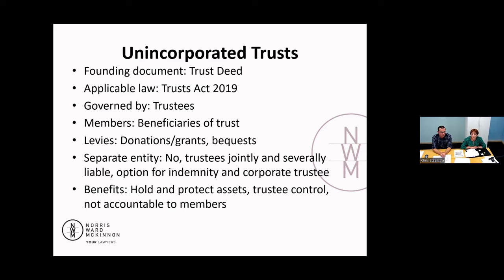One way to get around or avoid personal liability is to have a corporate trustee. A corporate trustee is a company — a limited liability company — meaning the liability of that corporate trustee is limited to the assets of that company. The individual directors or shareholders of that company are not going to be personally liable, with exceptions of course for company directors who don't act properly.